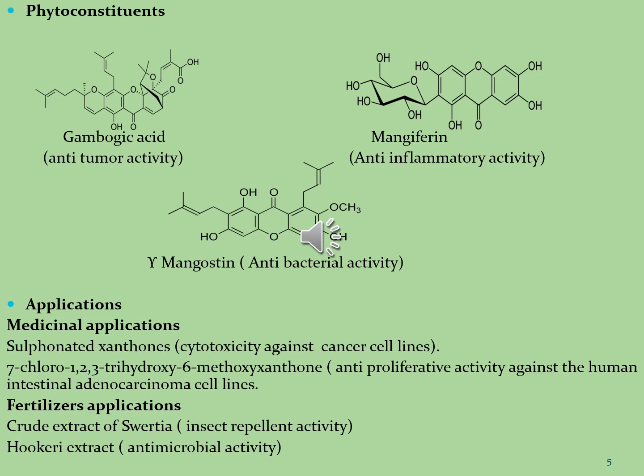Xanthones can also be used in medicinal applications as well as in fertilizers. Sulfonated xanthones are used as cytotoxicity agents in cancer cell lines. The second molecule is 7-chloro-1,2,3-trihydroxy-6-methoxyzanthone, which is used as an anti-proliferative activity against human intestinal adenocarcinoma cell lines. In fertilizer activity, crude extract of Civetia is used in insect repellent activity and hookworm extract is used as antimicrobial activity.